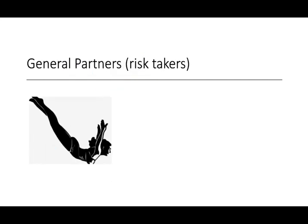General partners — think of them as the risk takers. Let's say you have an idea for a good business strategy but you don't have the money. When you go to ask someone for money, most probably they don't really understand your business, so they'll ask: what is my risk? You have to give them some protection. The general partners are the people with the ideas — they are the risk takers, and they actually run the company.